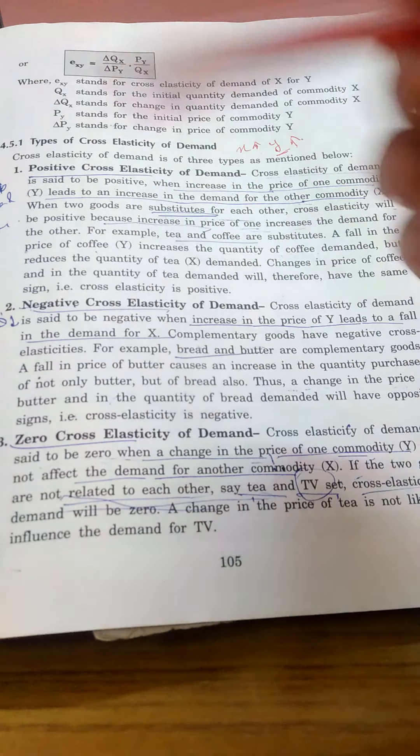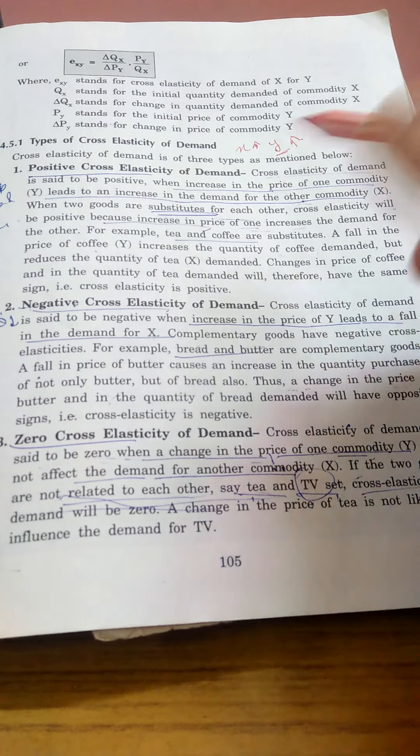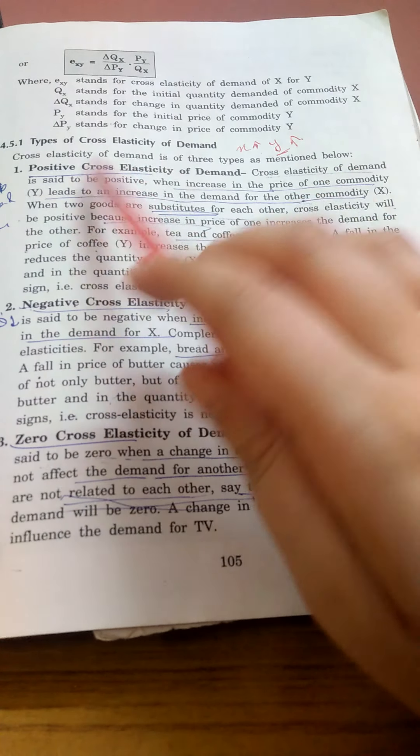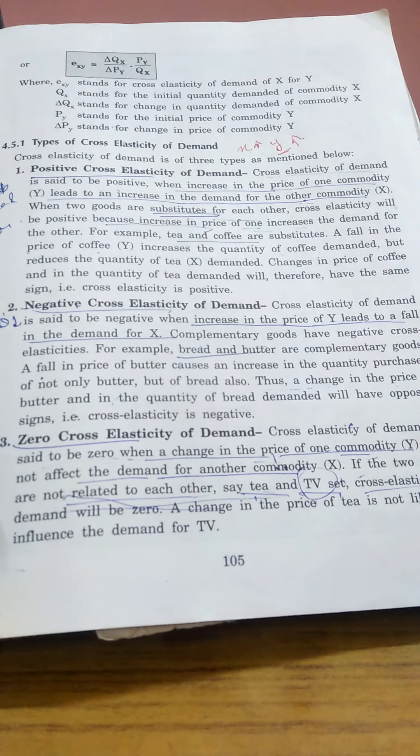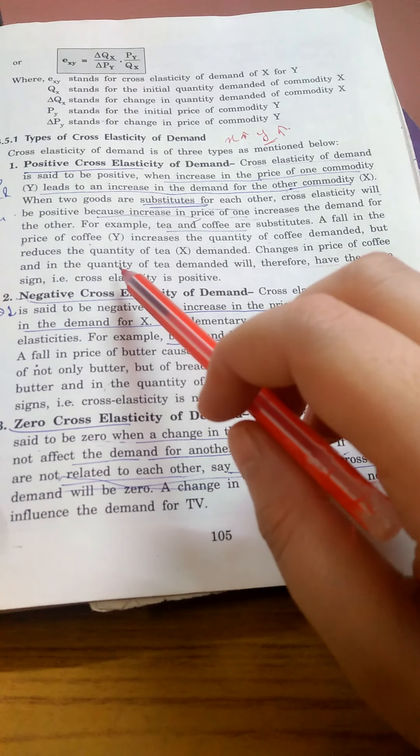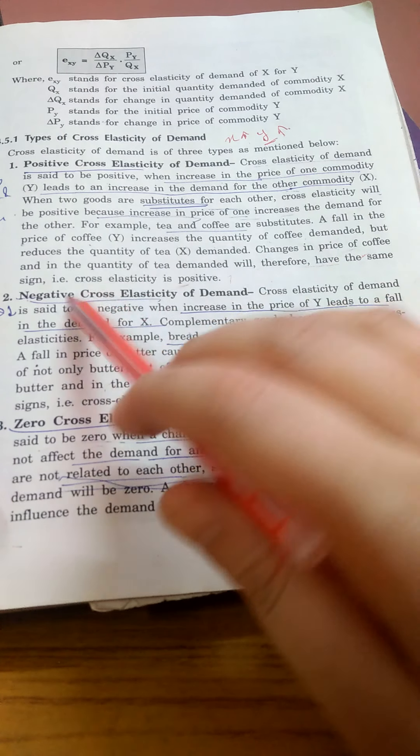For example, tea and coffee. If tea's price increases, then consumers will use coffee instead of tea, so the demand will be positive. On the other hand, if price of coffee falls, then demand of tea will increase, hence the cross elasticity is positive.